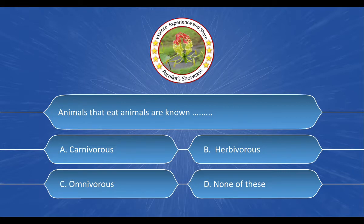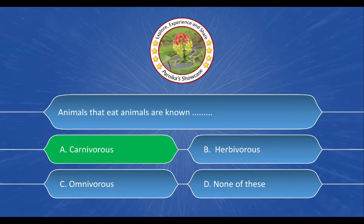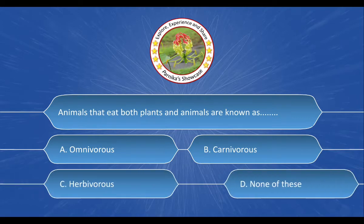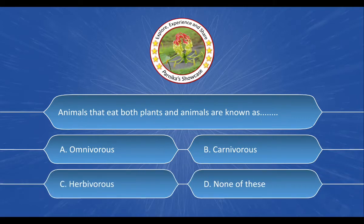Next question: Animals that eat animals are known as dash dash. The options are A. Carnivorous, B. Herbivorous, C. Omnivorous, D. None of these. And the correct answer is option A. Carnivorous.